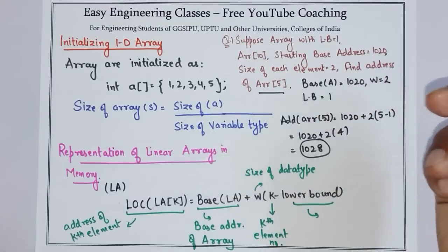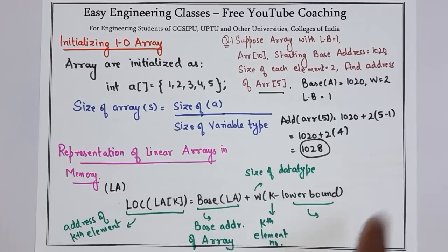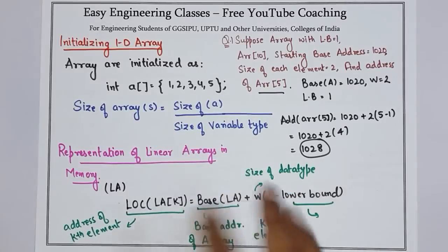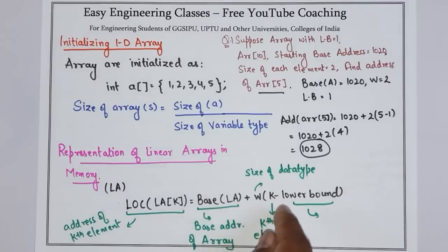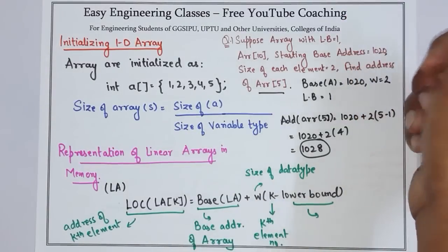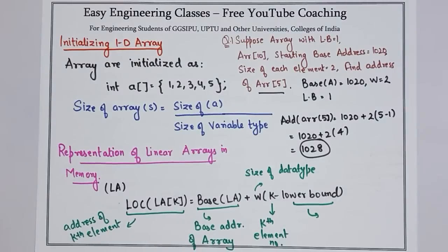In this way you can find the address of any element in a linear array using this formula. You just need to remember this formula. Given the base address and the lower bound, you can calculate any element's address. If the lower bound is not given, it is normally taken as 1 or 0 depending on the type of programming language you are using. Thank you for watching the video. Please subscribe to the YouTube channel for more tutorials on data structures and other computer science subjects.